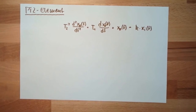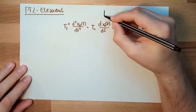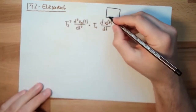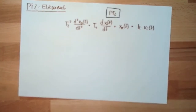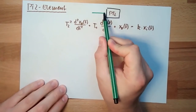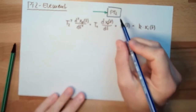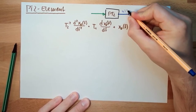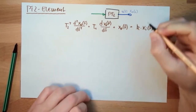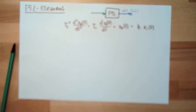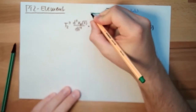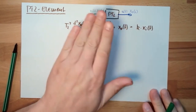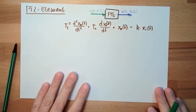Of course, it's still looking the same here. There's an element — PT2 it's called. There is an input and there is an output. So this is actually the same: this is xo(t), or after Laplace transformation xo(s), and this is xi(t), or after Laplace transformation xi(s). It's still the same. And this is the differential equation.